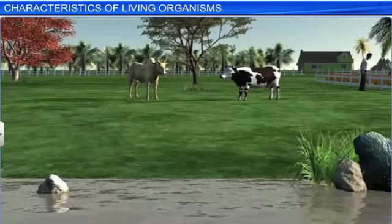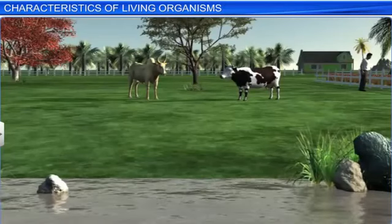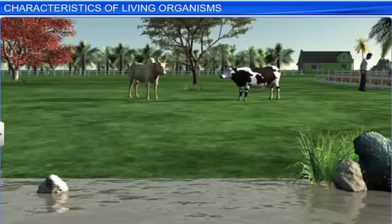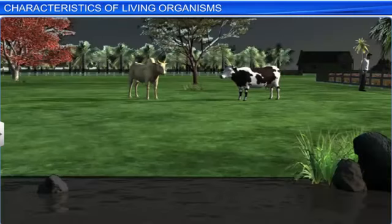The world consists of both the living and the non-living, but how do we segregate the two? We can do so by looking out for certain characteristics associated with living organisms.